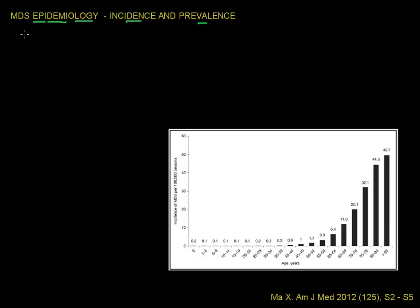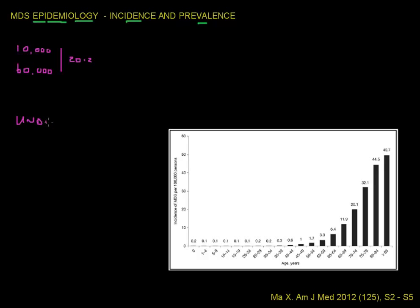Another way of looking at these data is to consider that there are about 10,000 new cases of MDS every year in the United States alone, and about 60,000 people living in the United States with MDS at present. This comes from data from 2012, but many people think that these numbers could even be higher and consider them an underestimation of the truth.